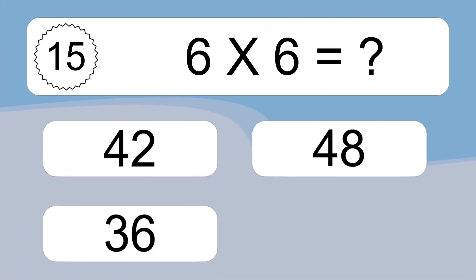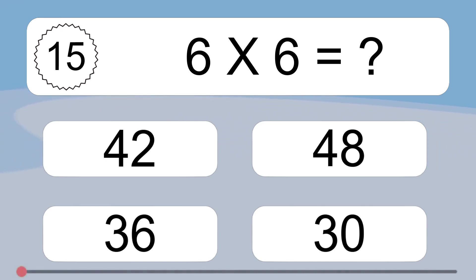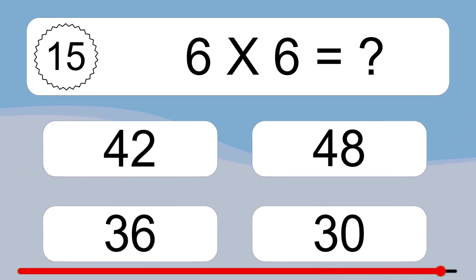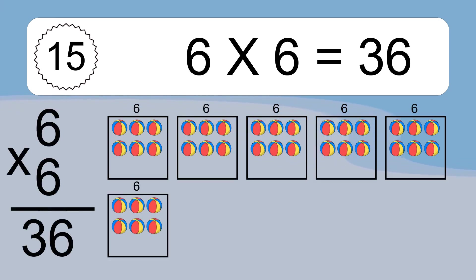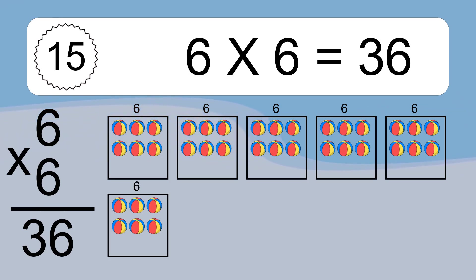6 times 6 equals what? 6 times 6 equals 36. We have 6 boxes, and each box has 6 colorful balls inside. If you count all the balls in all the boxes together, you will have 6 times 6 balls. This equals 36 balls.